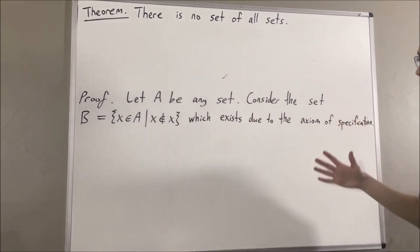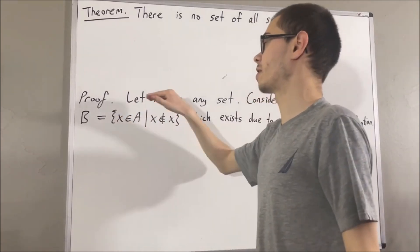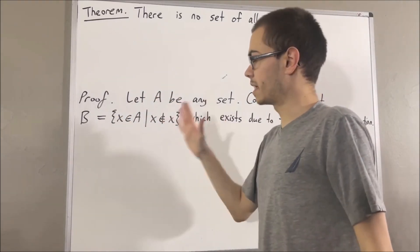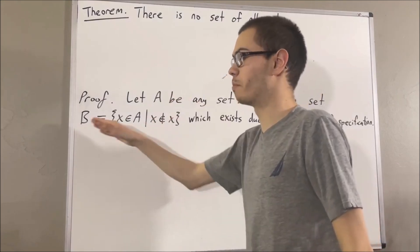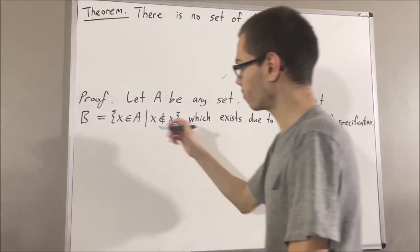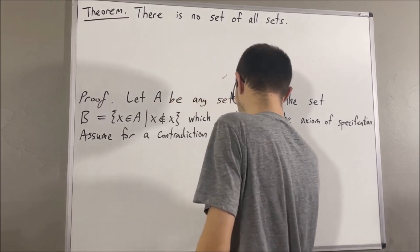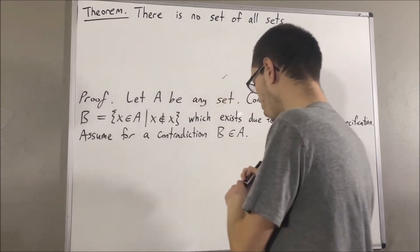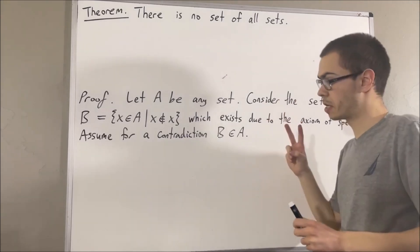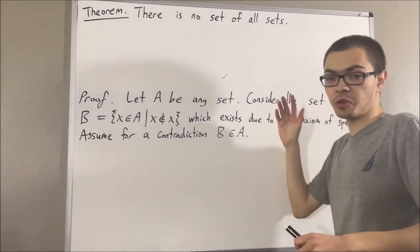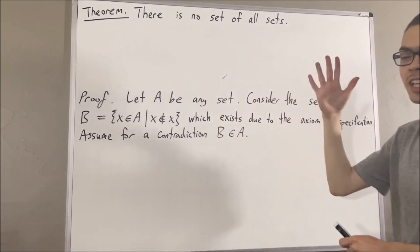So the claim is that B is not an element of A. To see why, assume for a contradiction that B is an element of A. From here, we are going to reach a contradiction by considering two cases: either B is an element of B, or B is not an element of B.